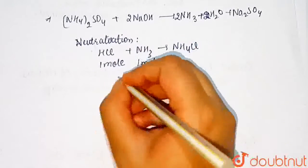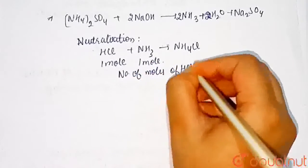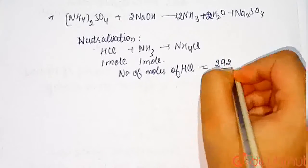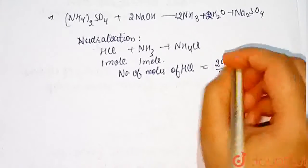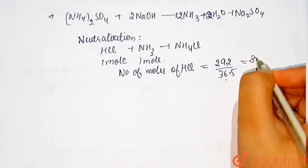So number of moles of HCl equal to 292 upon 36.5, given mass upon molar mass, which is equal to 8 moles.